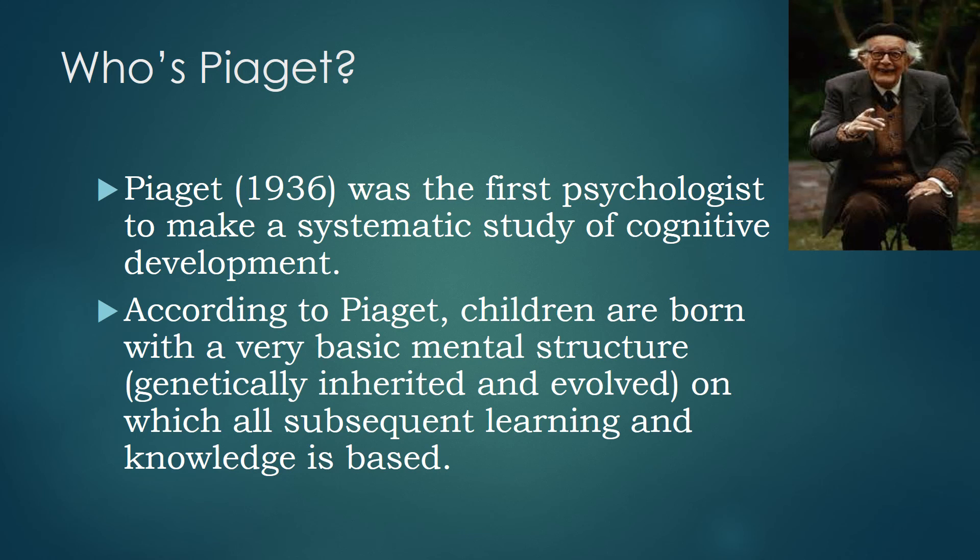Before that, I would like to talk about who Piaget is. In 1936, Piaget was the first psychologist to make a systematic study of cognitive development. According to Piaget, children are born with a very basic mental structure. He said all children are genetically inherited, and all subsequent learning and knowledge is based on this. He also said children have different capacities of mental power, inherited from their parents, but if they interact with the environment, they can develop their cognitive abilities.